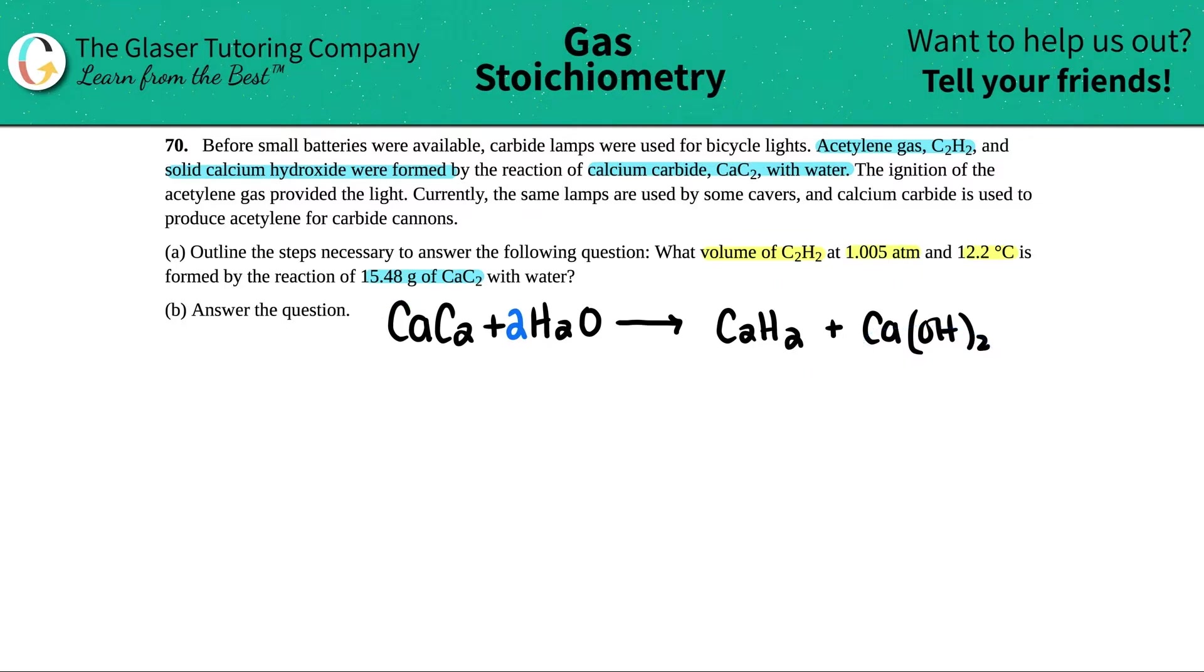Now let's write out everything that we have. They're asking for what volume of C2H2, so V equals question mark. At this pressure, what volume of this at this pressure, so these go together. They're giving me more information about the acetylene. So I have a pressure, I know it's a pressure because it's an ATM, atmosphere is ATM, that's pressure. So I have 1.005 ATM. And they tell us a temperature that goes with the acetylene as well, so temperature equals 12.2 degrees Celsius. And now they're telling us it's formed by the reaction of the CaC2, I have 15.48 grams of it.